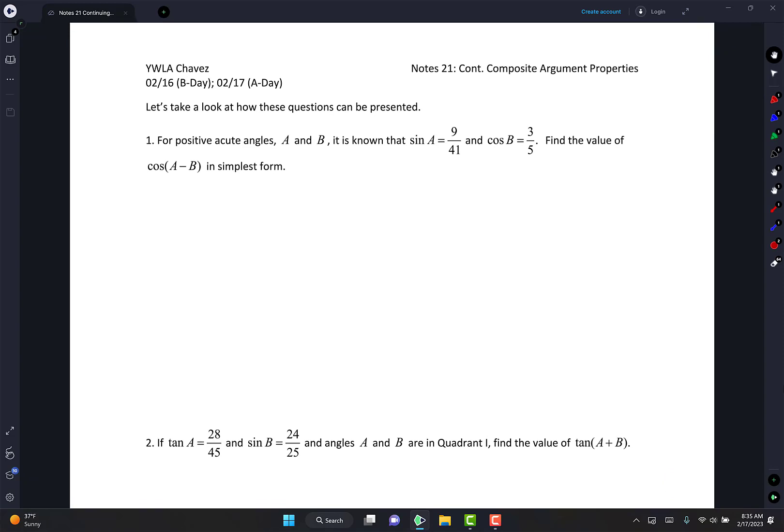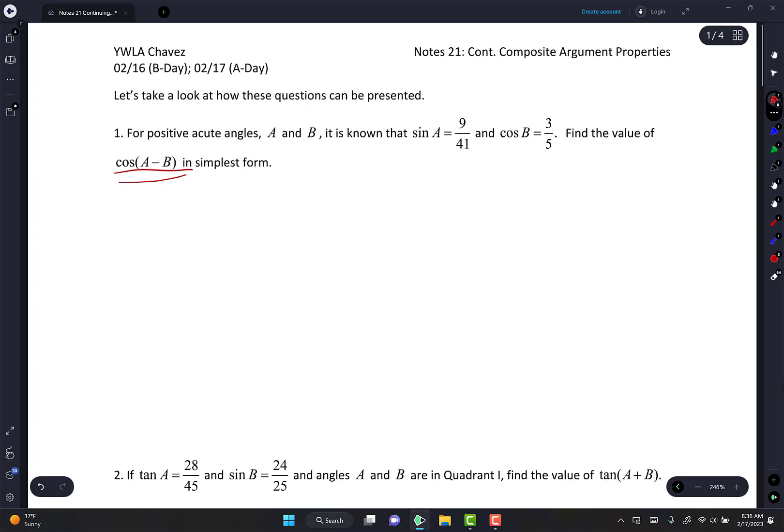So it's not too complicated, it's not too extreme if you know your rules from last week. So let's just get right into it. These are all just example problems. It says for positive acute angles A and B, so we know that A and B are in quadrant 1. It is known that sine A is 9 over 41 and cosine B is 3 fifths. Find the value of cosine A minus B. Give yourself a chance. Do you know the composite argument property for cosine A minus B? And say yes, say you do know it.